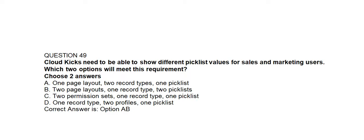Question number forty-nine. Cloud Kicks needs to be able to show different picklist values for sales and marketing users. Which two options will meet this requirement? Option A: One page layout, two record types, one picklist. Option B: Two page layouts, one record type, two picklists. Option C: Two permission sets, one record type, one picklist. Option D: One record type, two profiles, one picklist. Correct answer is Option A and Option B.